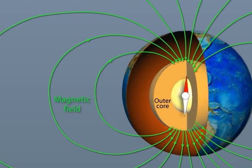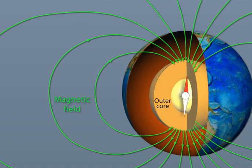The liquid outer core is convecting vigorously and generates Earth's magnetic field.